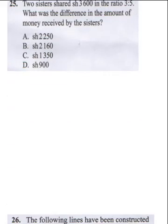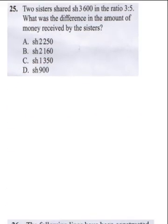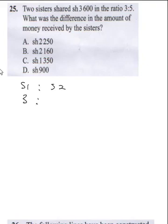Question 25 says two sisters shared 3,600 in the ratio of 3 to 5. What was the difference in the amount of money received by the sisters? Sister 1 to Sister 2 shared 3 to 5.